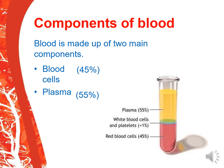What are the components of blood? Blood is made up of 2 main components: blood cells and plasma. Blood cells constitute about 45% and plasma about 55% of blood. You can see here — plasma is a yellow color fluid at 55%, and white blood cells, platelets, and red blood cells constitute about 45%.